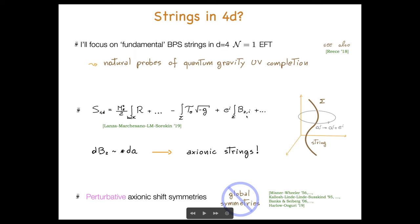This is a natural way of introducing these strings as electrically charged objects, but one can provide a magnetically dual description by dualizing these two-forms into corresponding axions. Then these strings can be regarded as axionic in the sense that around them, the axions undergo an integral shift which is determined by their charges. A key observation is that when you perform this duality, you automatically get an effective theory in terms of the axions which is classically invariant under axionic shift symmetries.